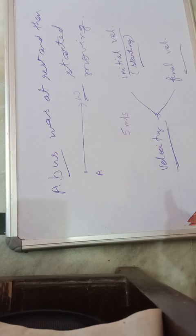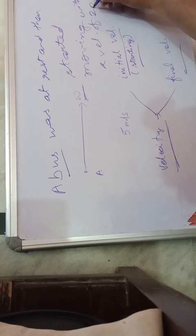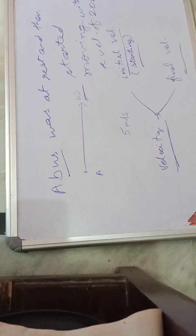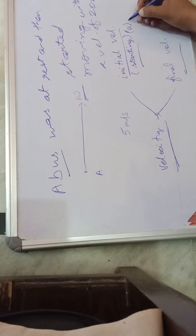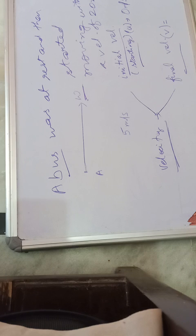For example: a bus was at rest and then started moving with a velocity of 20 meters per second. Initially the bus was at rest, meaning not moving. So starting velocity U = 0 meters per second. Final velocity is denoted as V, and here V = 20 meters per second.